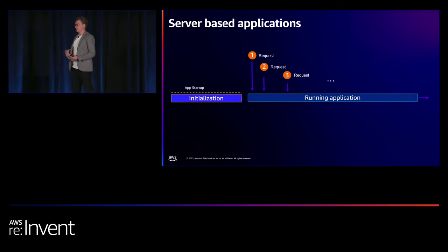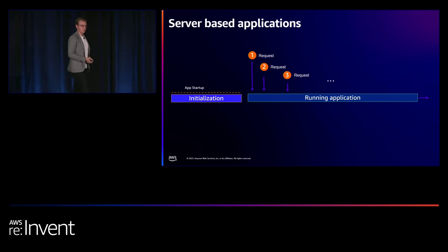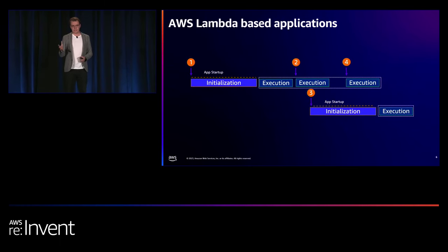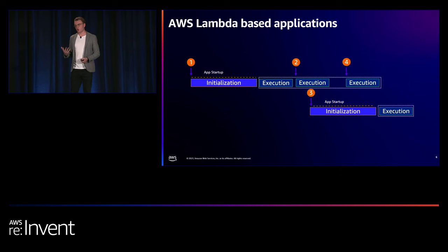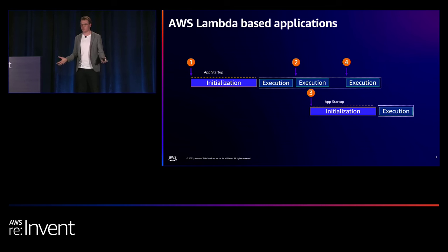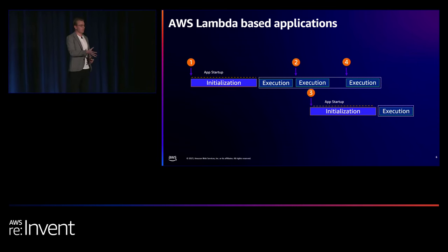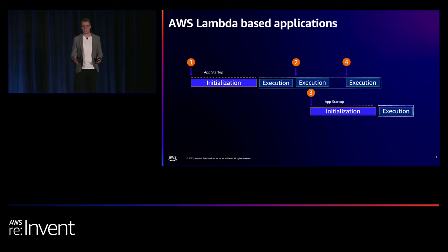With traditional ways of building applications, whether on a VM or a container, your application starts once and requests come in and are handled concurrently within that same running instance. With Lambda, this differs pretty fundamentally. Your application isn't started until the first request comes in, and each execution environment can only process one request at a time. If two requests arrive simultaneously, your entire application needs to start up again — that initialization phase happens again.